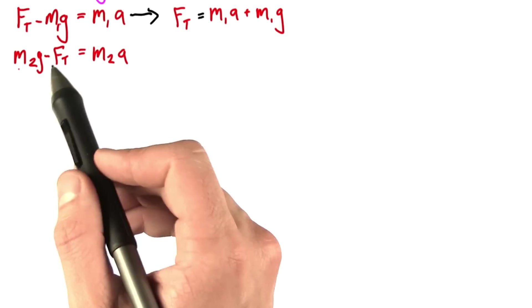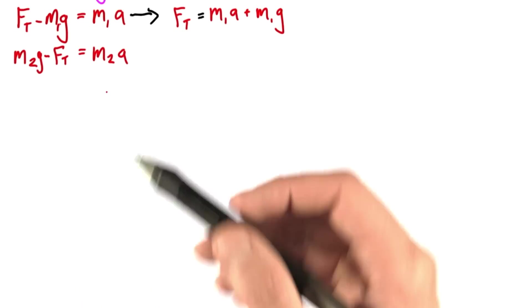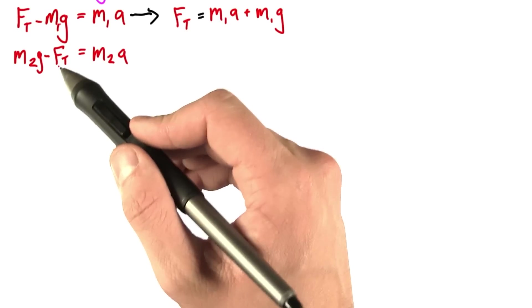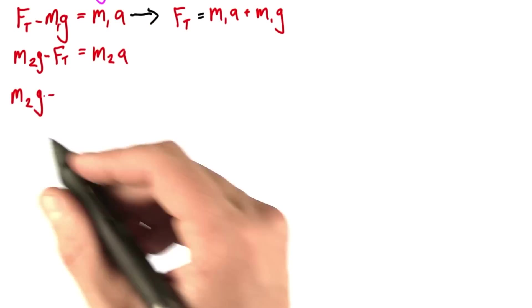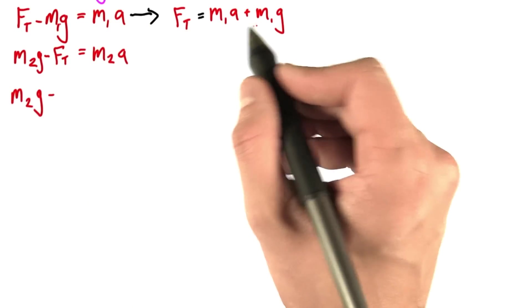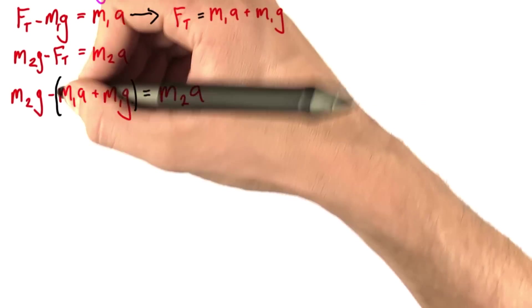The idea being that now I'll get this equation in terms of only one unknown, a, and FT won't show up anymore. So I rewrite m2g minus FT, but now using this, and that equals m2a. Let's just distribute this minus sign and lose the parentheses.